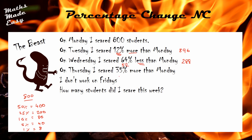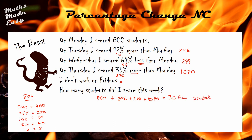On Thursday he scared 35% more than Monday. 35% = 25% + 10% = 280 students. Because it's more than Monday that's an increase, so 800 + 280 = 1080 students on Thursday. The beast doesn't work on Friday. To find the weekly total: 800 + 896 + 288 + 1080 = 3064 students scared this week.